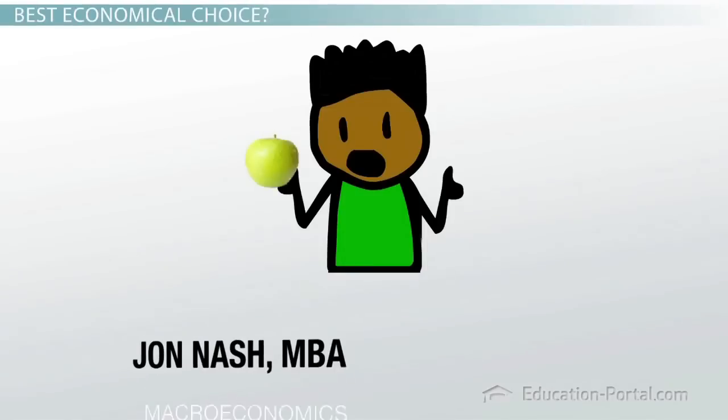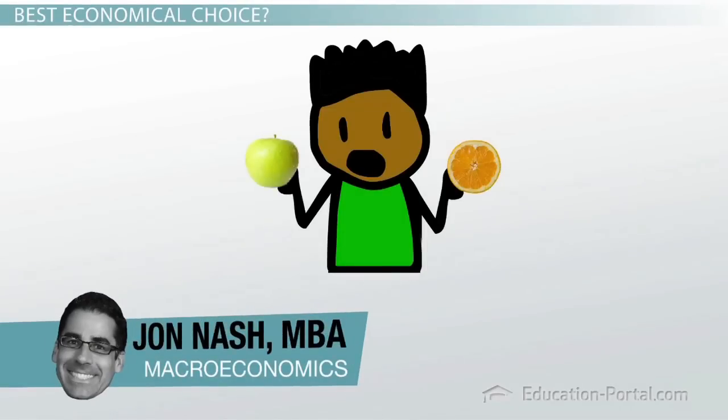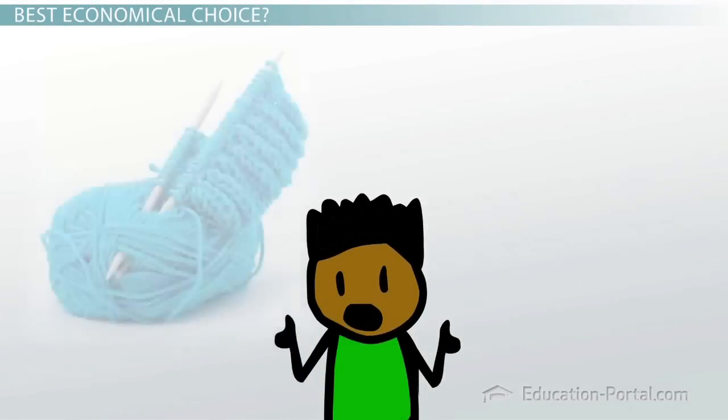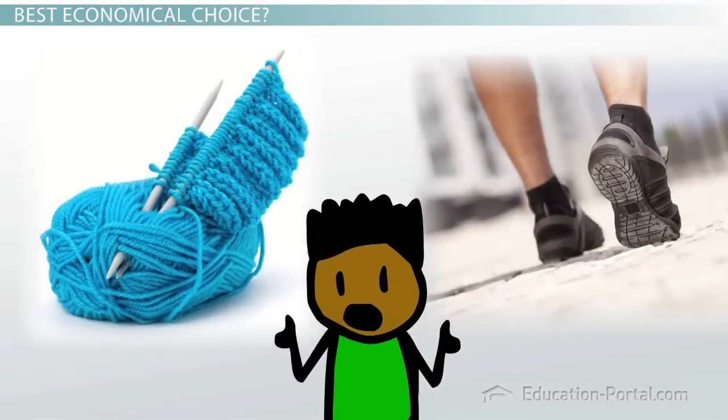So now we have a choice between two alternative possibilities. We can either choose one thing or another, but not both. For example, we could choose to spend our time knitting or walking, but not both.